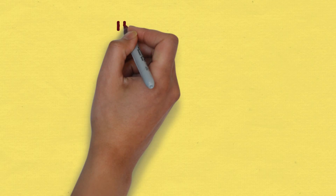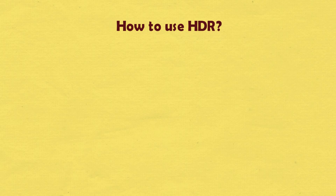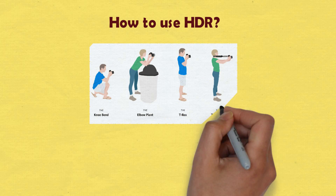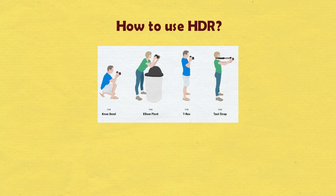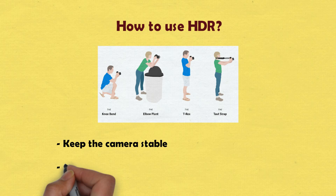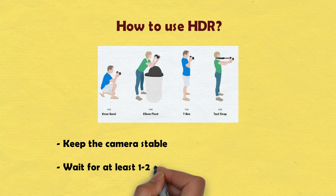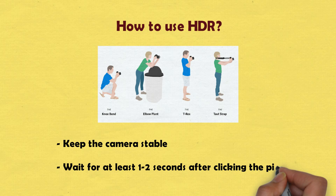Now let us see how to use HDR. As HDR mode captures multiple images, the major point to consider is to keep the camera stable and wait for at least 1 to 2 seconds after clicking the picture. This could be more depending upon the equipment that you are using and the environment that you are shooting in.